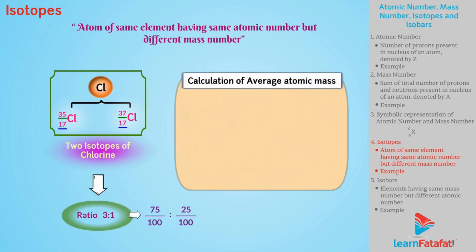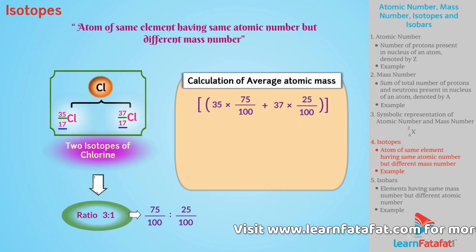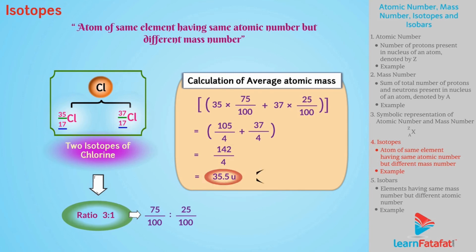average atomic mass can be calculated as 35 times 75 upon 100 plus 37 times 25 upon 100 which equals 105 by 4 plus 37 by 4 which equals 35.5 unit. 35.5 shows average atomic mass of Cl-17-35 and Cl-17-37.